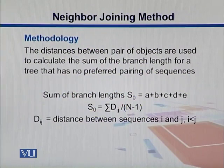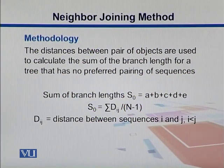That summation over all distances divided by N minus 1, the total number of sequences minus 1. If we take the summation of Dij divided by N minus 1, that also equals S0.